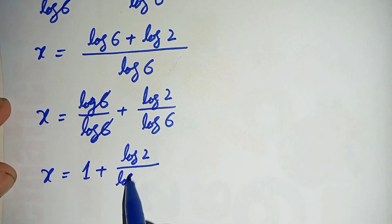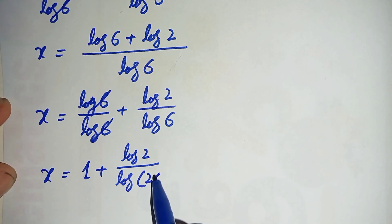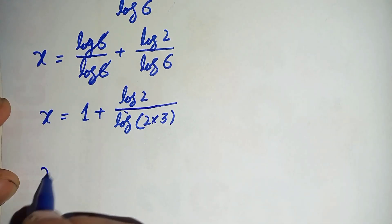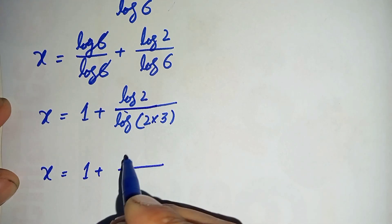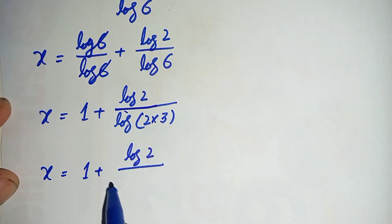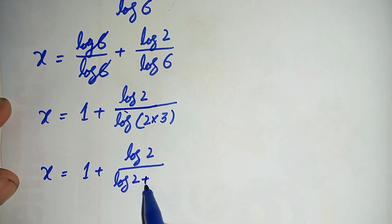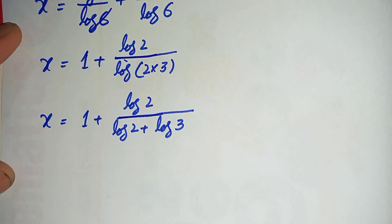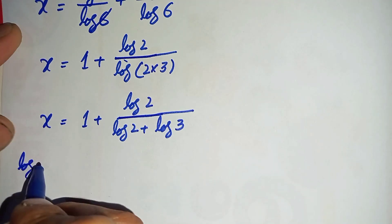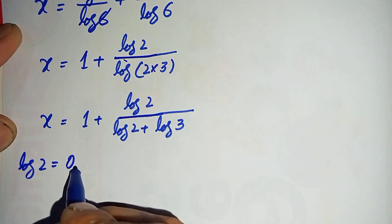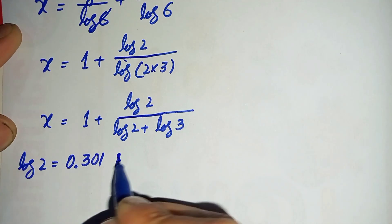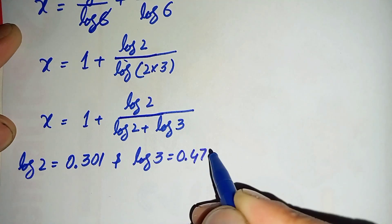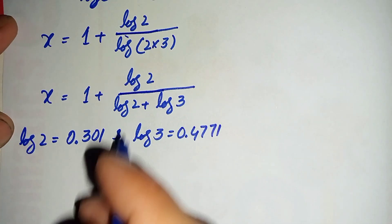Log of 6 can also be written as log of 2 times 3, which equals log of 2 plus log of 3. So the equation becomes x equals 1 plus log of 2 divided by log of 2 plus log of 3. We now substitute the values: log of 2 is equal to 0.301 and log of 3 is equal to 0.4771.